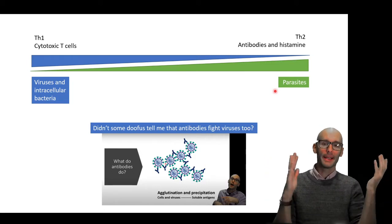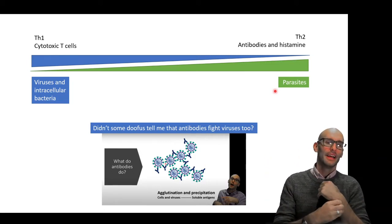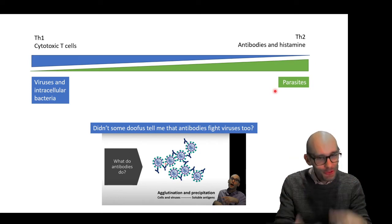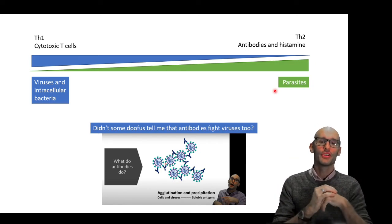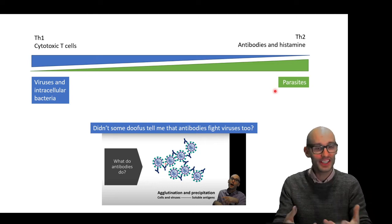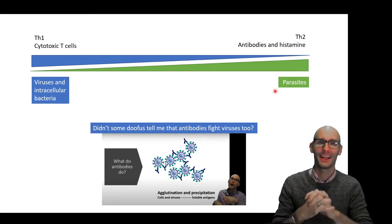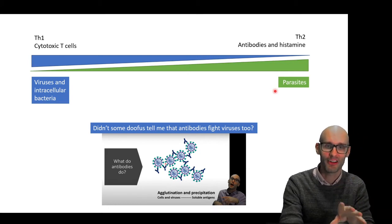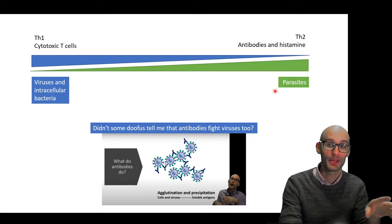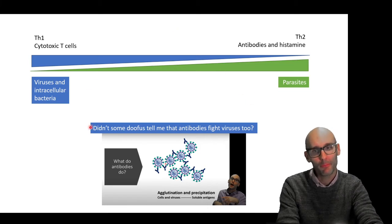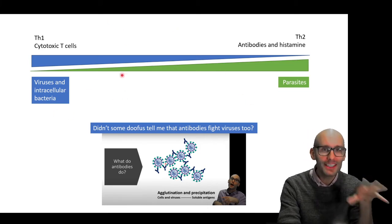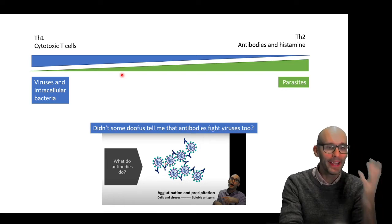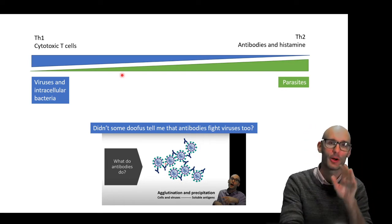But hold on a minute, didn't some doofus tell me that antibodies are good at fighting viruses too. And that is 100% true. We want antibodies to fight viruses. Agglutination is great. Neutralization is great. So the functions of antibodies are excellent at fighting viruses. So we need some antibody production. And so we need perhaps a bit more of a mixed response in order to induce the optimal antibody and cytotoxic T cell production.